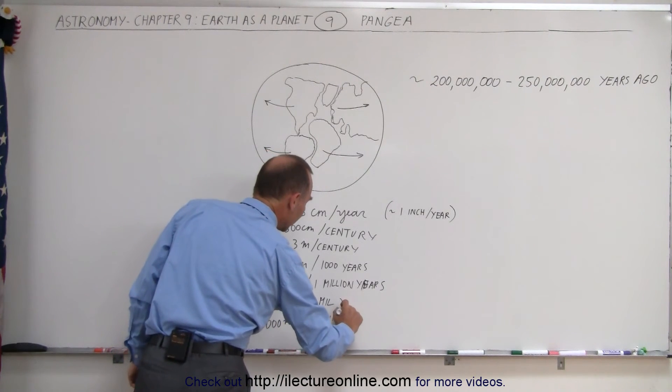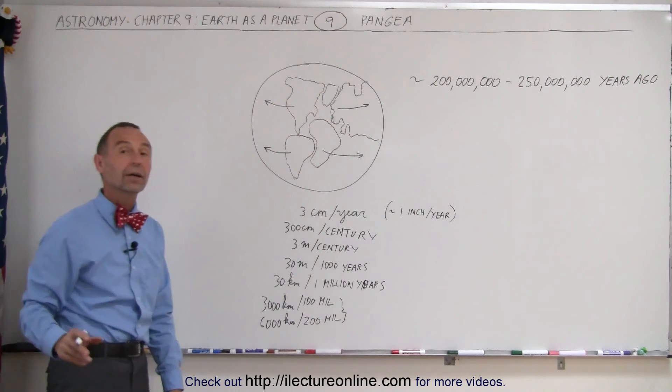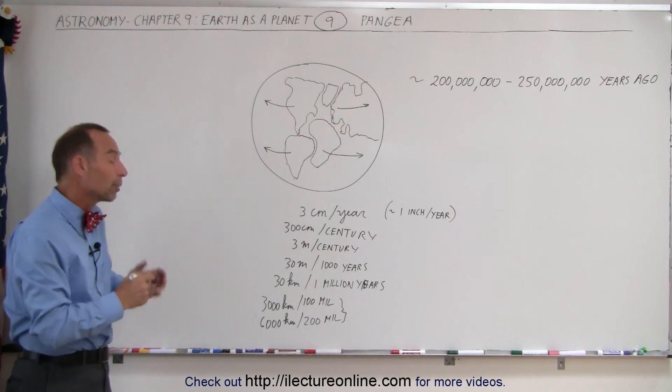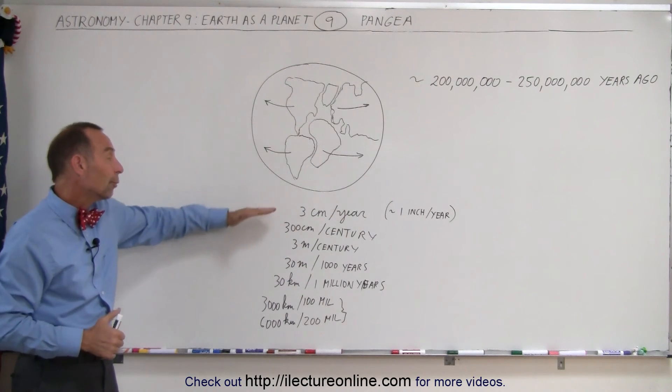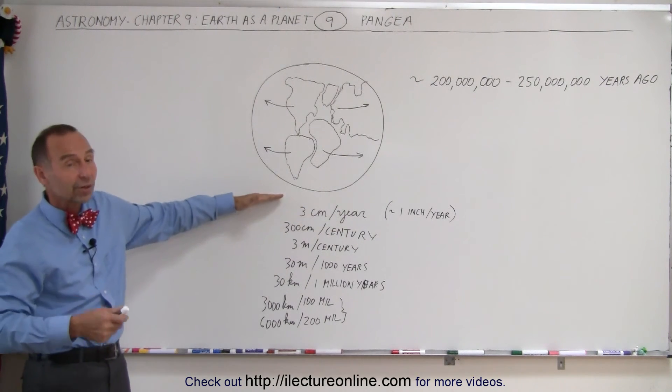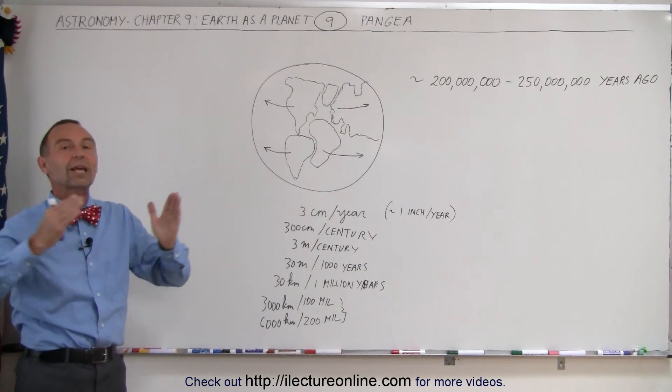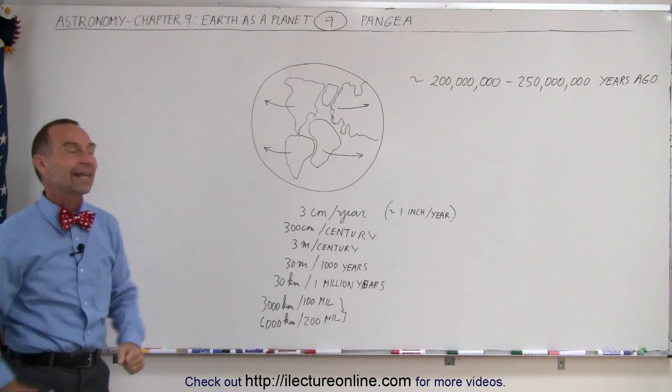And that is roughly the distance between North America and Europe and South America and Africa. Not quite 6,000 kilometers, but close to that. So you can see that a rate of about one inch per year, about three centimeters per year, in the time span of 200 million years, you can create something as large as the Atlantic Ocean.